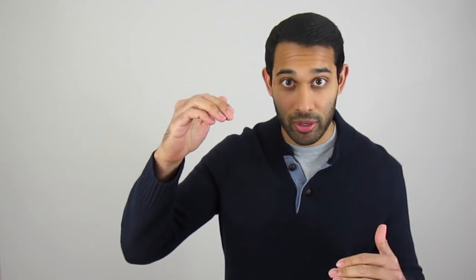This causes riskier assets like stocks to get bid up, driving their valuations higher. And when valuations increase, expected future returns go lower. Eventually risk premium spreads get pulled really tight together, as you can see in this chart. Valuations get so high that expected returns in stocks almost equal cash, but with much higher volatility. This happens during the late cycle phase of the short term debt cycle.